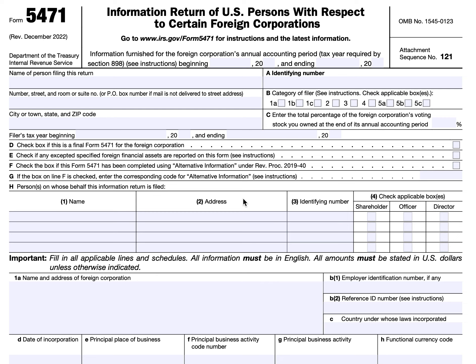Let's start with the top of the form. At the very top, you'll need to provide the information furnished for the foreign corporation's accounting period — beginning and ending dates. If they have a fiscal year that is not the same as a calendar year, you'll enter that information accordingly. Below that, you'll enter the name of the person filing the return and their identifying number, which can be a Social Security number or an employer identification number depending on what type of taxpayer is filing. Then you'll enter the number and street mailing address.